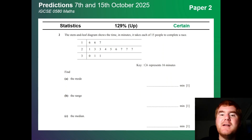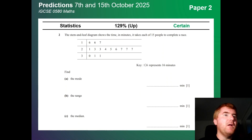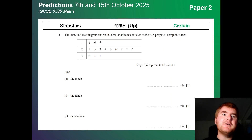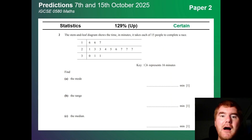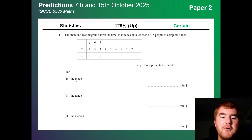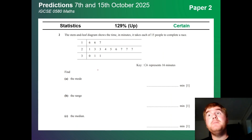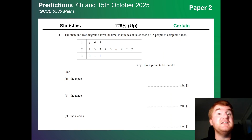Statistics is up at 129%. They are putting typical calculator topics into Paper 2 as well, so you still need to revise this. Notice we've got mode, range, and median from a stem and leaf diagram, but there could also be a cumulative frequency diagram that you have to read from.